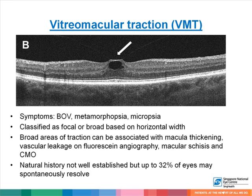Patients with VMT complain of blurring of vision, wavy lines, or objects looking smaller than they are. It can be classified as focal or broad-based. Broad-based areas of traction may be associated with thickening of the macula, vascular leakage on fluorescein angiography, macular schisis, or cystoid macular edema. The natural history of VMT is not well established, but up to one-third of eyes may spontaneously resolve.